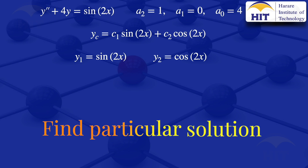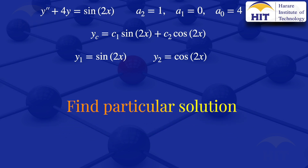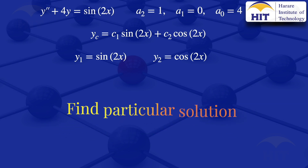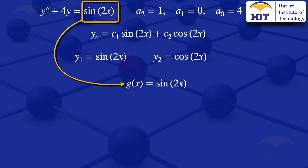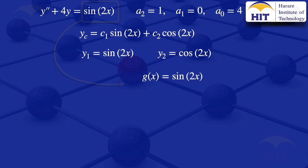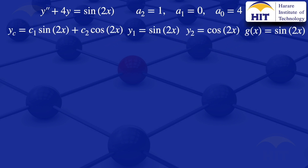The next step is to obtain the particular solution of the given non-homogeneous ODE using the method of variation of parameters. For this method, we identify g(x), which is the right-hand side of the equation. Here g(x) = sin(2x). So we have our y1, y2, and g(x).